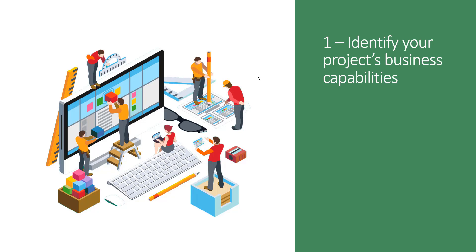The first tip is to identify your project's business capabilities. So the question is: what is a business capability? In a nutshell, we can say that it is a specific functionality of your project, a specific part of your project — or in other words, a feature of your project.